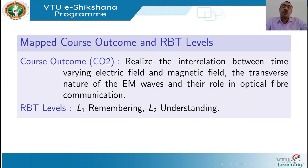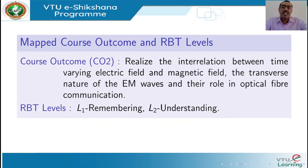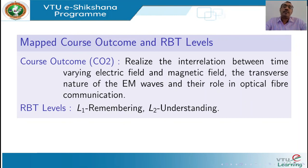Let us know the mapped course outcome and RBT levels. In the engineering physics curriculum, there are five course outcomes, and course outcome 2 (CO2) is mapped to this particular module. Once students complete this module, they should be able to realize the interrelation between time-varying electric and magnetic fields, the transverse nature of electromagnetic waves, and their role in optical fiber communication.